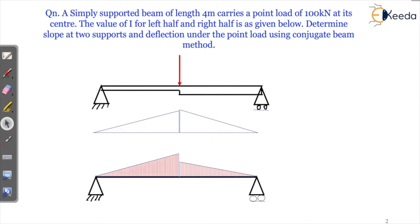A simply supported beam of length 4 meters carries a point load of 100 kN at its center. The value of I for the left half and for the right half is as given. Find the slope at the two supports and deflection under the load. The E value is also given.